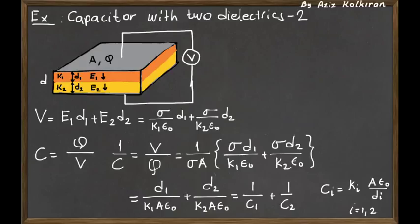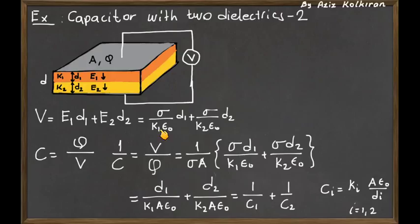If you had not two different materials but three different materials with thicknesses d1, d2, and d3 — sandwiched and parallel on top of each other — then you would have 1/C1 plus 1/C2 plus 1/C3. You apply the same approach: first calculate the total potential difference as E1·d1 plus E2·d2 plus E3·d3. Whatever the number of dielectrics sandwiched between the plates, you will have a capacitance equivalent to that many capacitors connected in series.